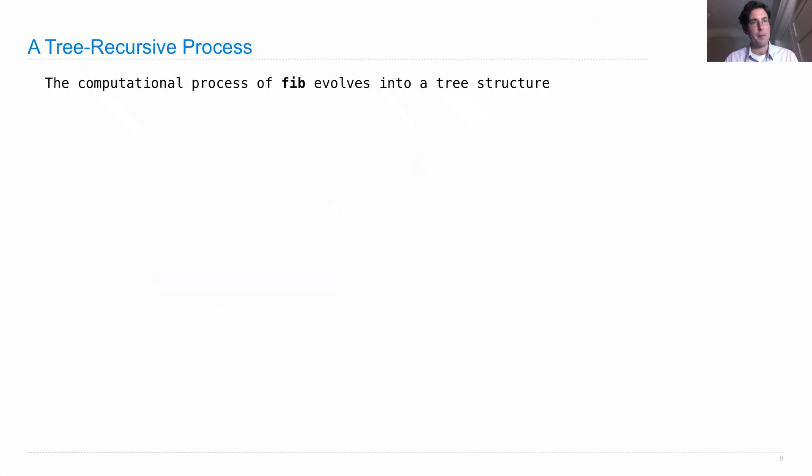The computational process of fib, the one we just defined, creates this tree structure. We're calling fib(6) makes two recursive calls, one to fib(4) and one to fib(5). The fib(4) comes first. How do we compute fib(4)?